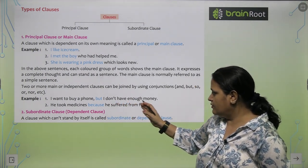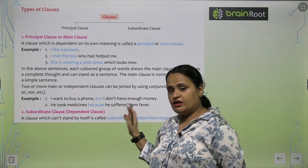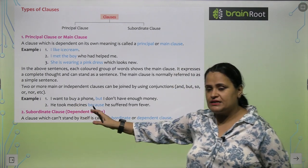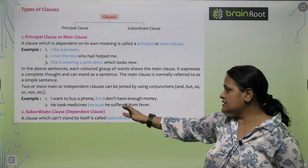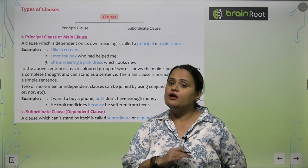I want to buy a phone but I don't have enough money. So, this is the another clause and this is the first clause, and we are joining it with the conjunction. He took medicine because he suffered from fever.